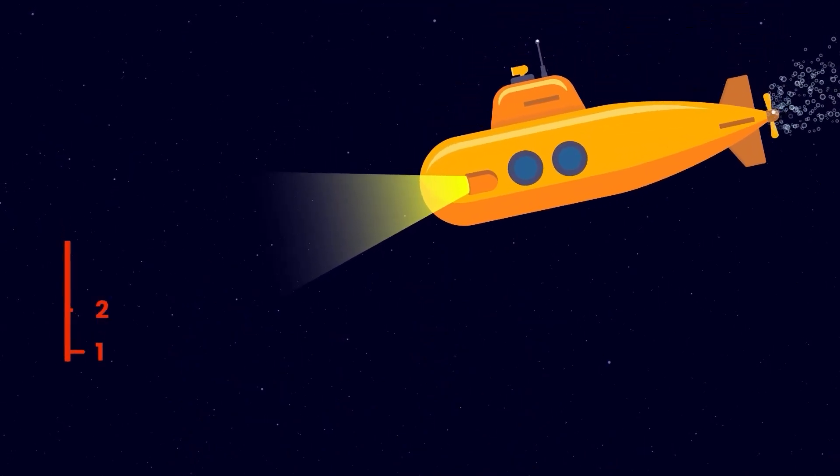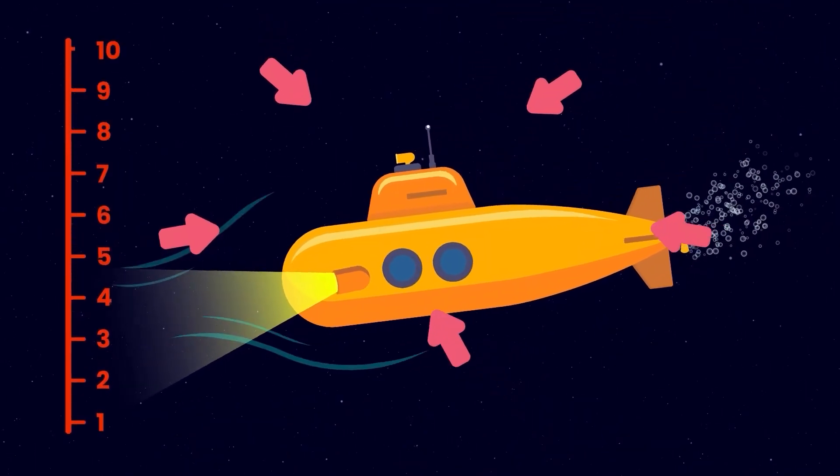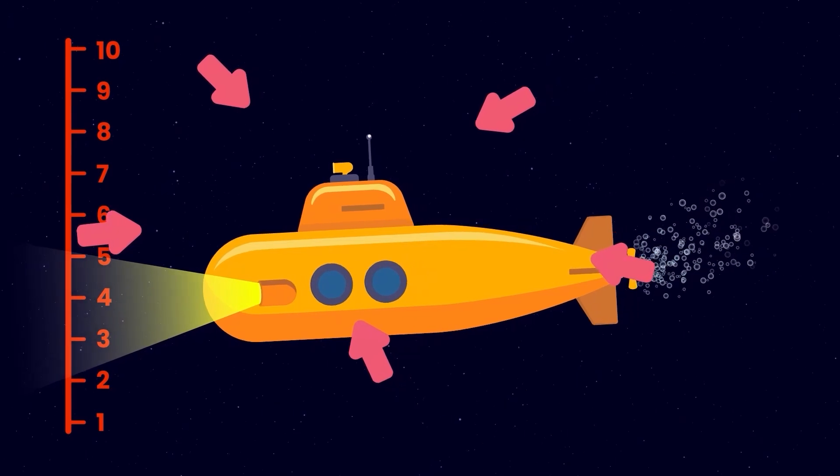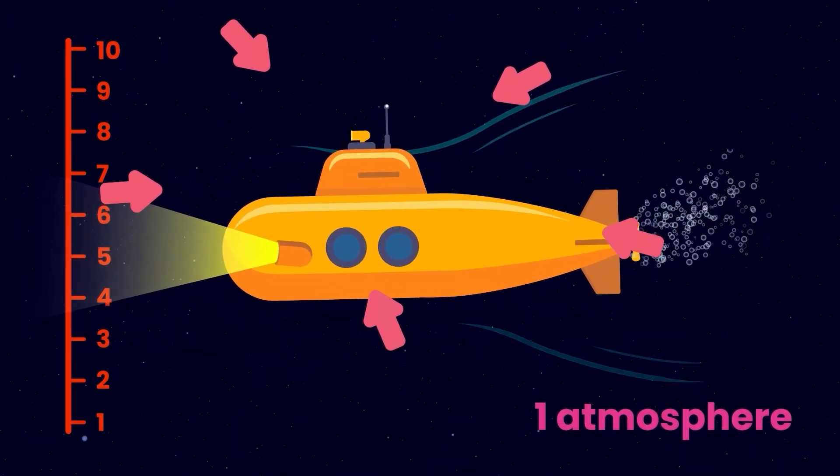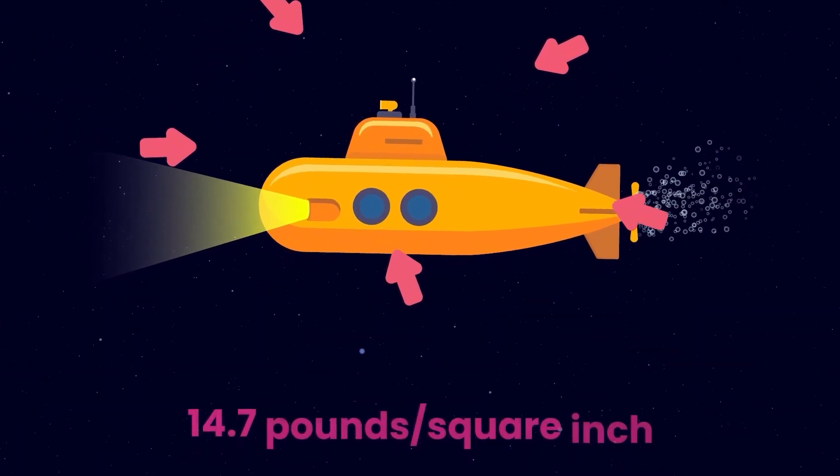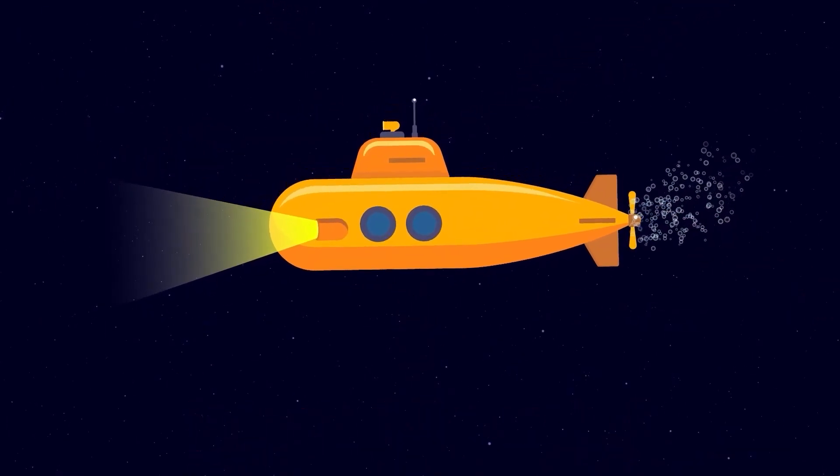You see, for every 10 meters, or 33 feet, that you go down in the ocean, the pressure increases by one atmosphere. One atmosphere is equal to 14.7 pounds of pressure per square inch. So,